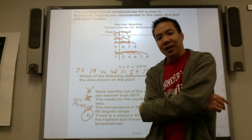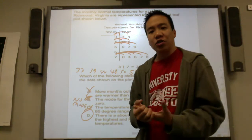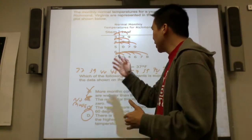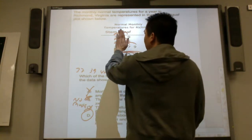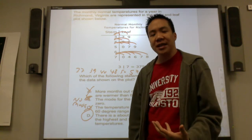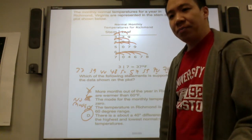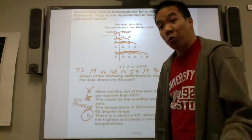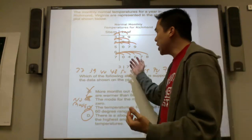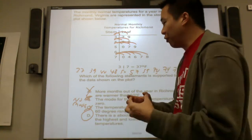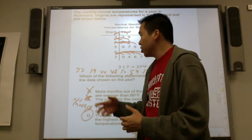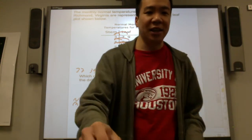So what we're talking about here is stem and leaf plots. It's another way to categorize a large group of numbers — you organize them from least to greatest and split the tens place from the ones place. From a stem and leaf plot you can interpret the data: find the median, mode, range, mean, or count how many values fall in a certain range. That's how you interpret data from a stem and leaf plot. Thank you for watching!